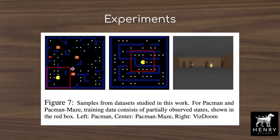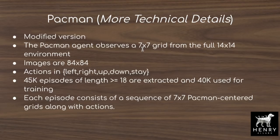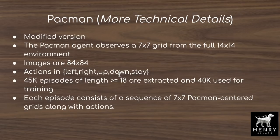Now we get into the experiments. They test on Pac-Man with ghosts, Pac-Man with a random maze and no ghosts, and the VisDoom environment from Ha and Schmidhuber's World Models paper. The Pac-Man environment is a modified version where the agent observes a 7 by 7 grid from a full 14 by 14 environment, so it doesn't see all ghosts at every time step. Images are 84 by 84 pixels. Available actions are left, right, up, down, and stay. The world model is learned from 40,000 episodes sampled from 45,000, with each trajectory having greater than or equal to 18 steps. Each episode consists of the sequence of 7 by 7 Pac-Man centered grids along with corresponding actions for the action condition discriminator.